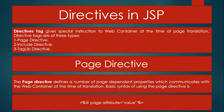Hello friends, in this video tutorial we discuss about the directives in JSP. Directive tags give special instructions to the web container at the time of page translation. Directive tags are of three types: Page Directive, Include Directive, and TagLib Directive.